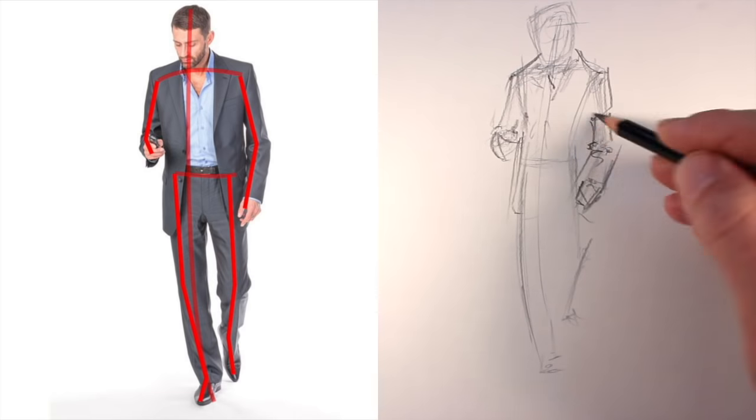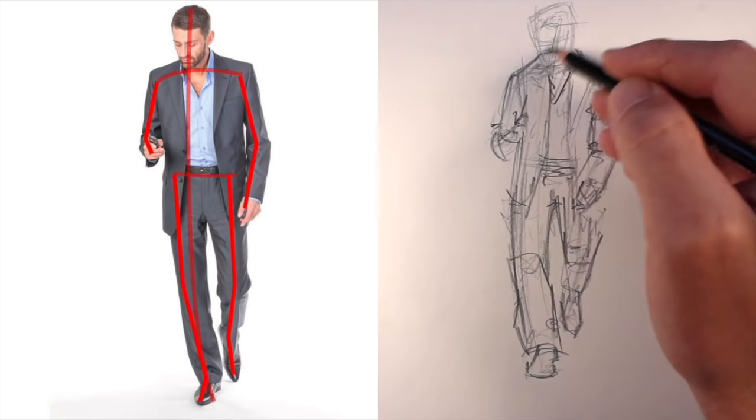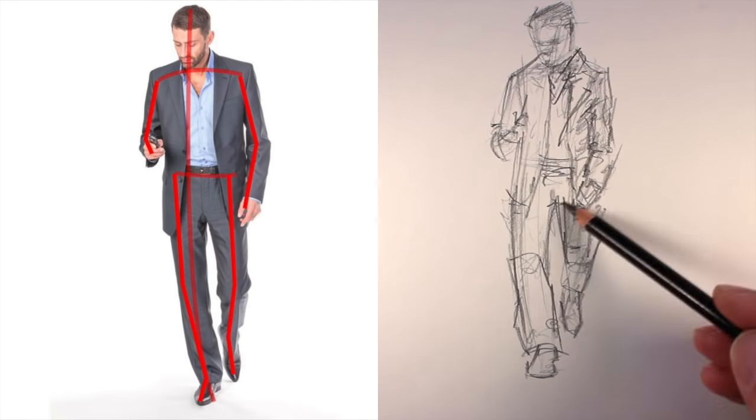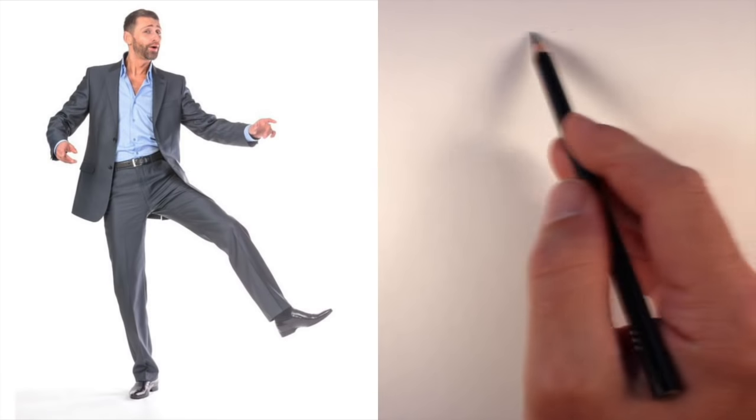Then, using the shoulder and the waist as a guideline, I can go ahead and loosely fill in the rest of the information for the arms and the legs, and maybe even a little bit of information about the value. I can create areas of darker value to create shadow.